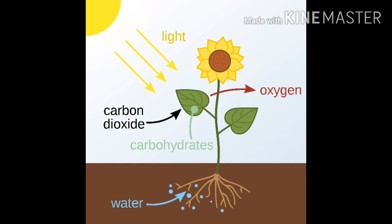Plants do not normally move, but plants are also a part of living things. While living things can move, plants cannot. Living things need air, water, and food for growth. Living things are made up of cells.